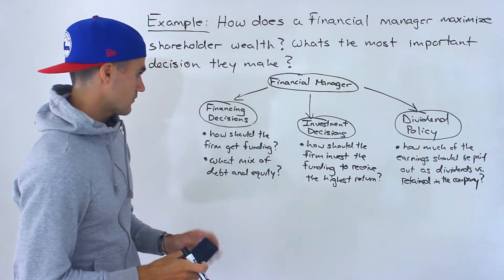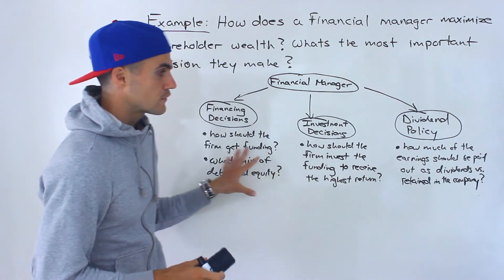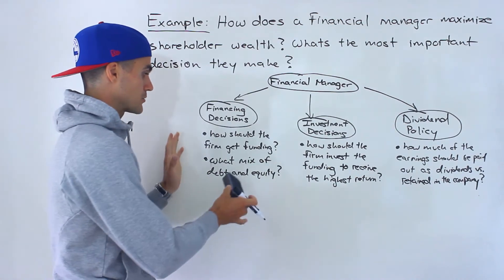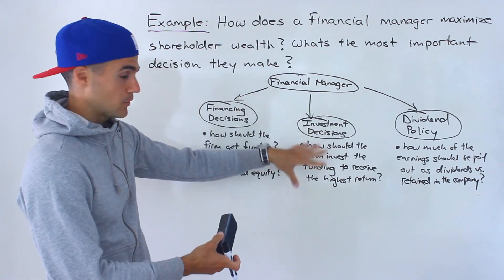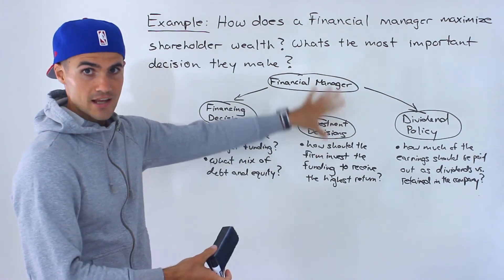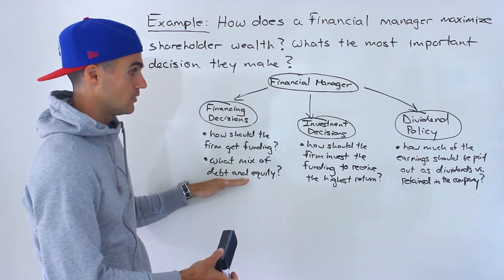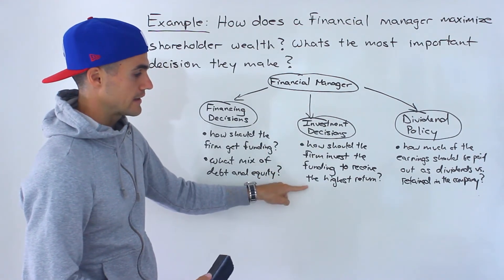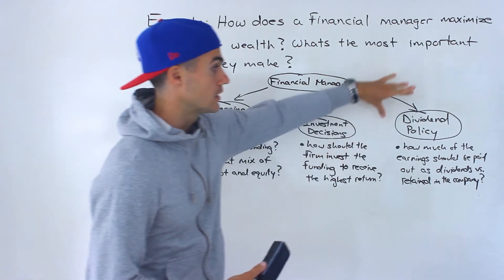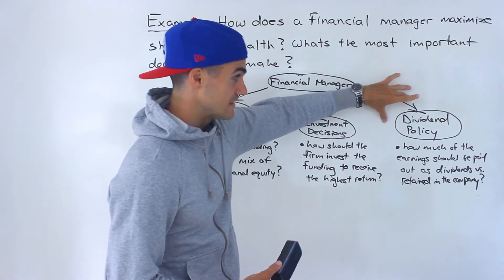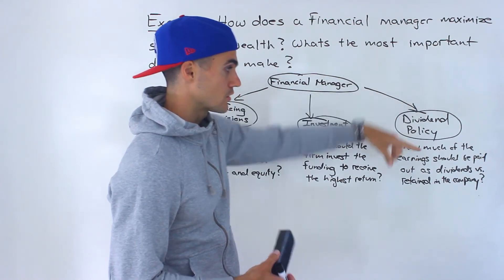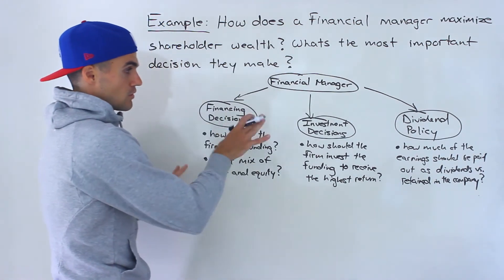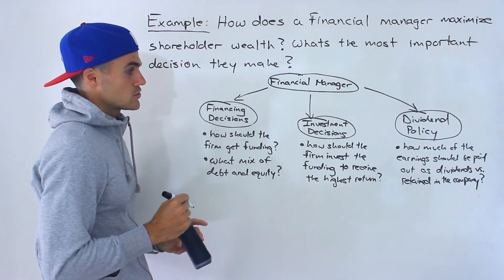All of these decisions are going to be different chapters in your finance textbook. There's going to be a chapter dealing with what mix of debt and equity the firm should use on the right side of the balance sheet to get the lowest cost of capital. Then how they should invest the funding, dealing with capital budgeting and NPV projects. And there's going to be a chapter on dividend policy — how much of the earnings should be paid out versus retained. Those are the three main general decisions a financial manager makes.